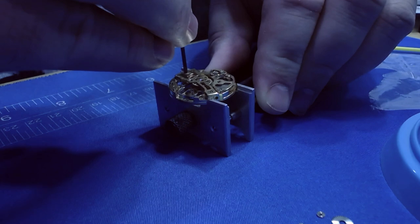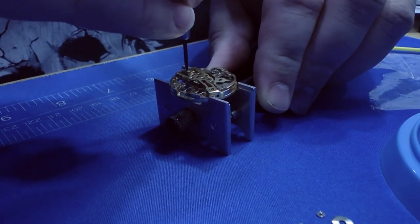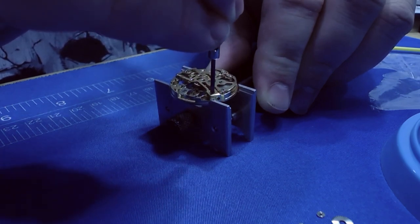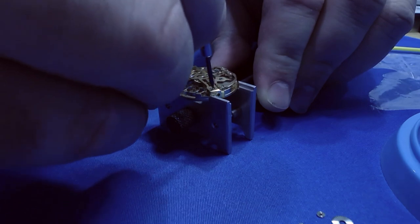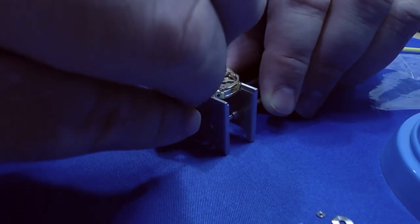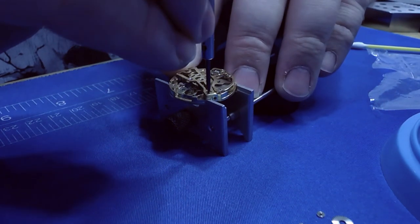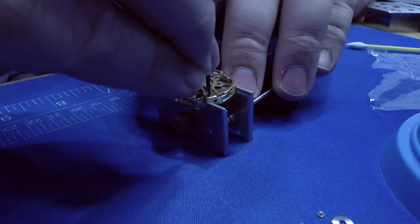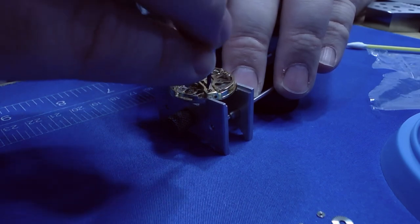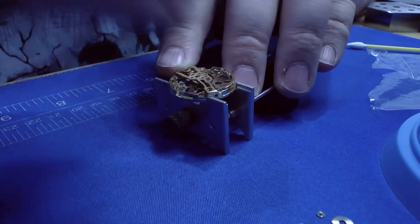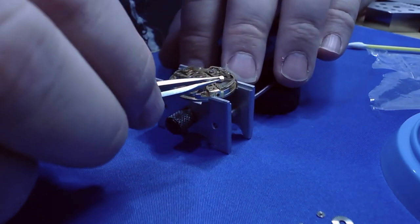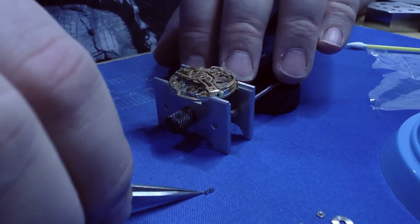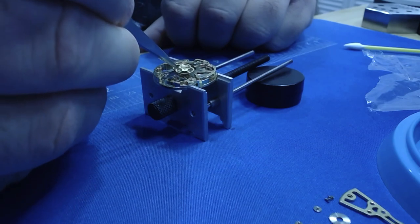So next task is removing the train bridge. This is covering the escape wheel, the third wheel and the fourth wheel. On this movement the fourth wheel is used to drive the second hand, so it's actually concentric with the center wheel, aka the second gear. And this bridge over the top of them has jewels for, as I say, third, fourth and the escape wheel for the top of those pivots. Sometimes I find that when the screws are tough to get out, sometimes putting some pressure downwards on them at the same time is just kind of enough to break them free.